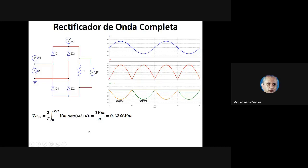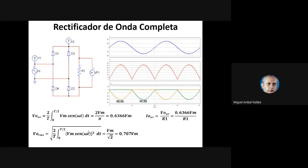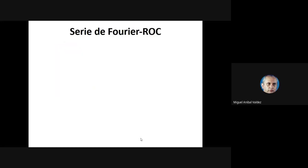Acá tenemos la tensión media, que ya la conocíamos porque la hemos calculado desde el práctico cero: la tensión de 2·Vp sobre π. Tenemos la corriente media, que es esa tensión dividida en la resistencia, y la tensión eficaz de la salida, que es lo mismo que la tensión eficaz de una señal senoidal. También la corriente eficaz de salida. Vamos a ver la serie de Fourier, que ya la sabíamos: se calculó en el práctico cero, y el coeficiente Bₙ es igual a cero porque la función es par y tiene coeficientes en coseno.